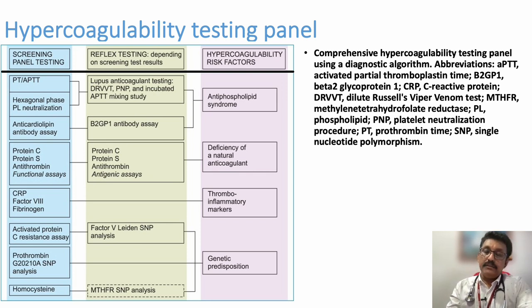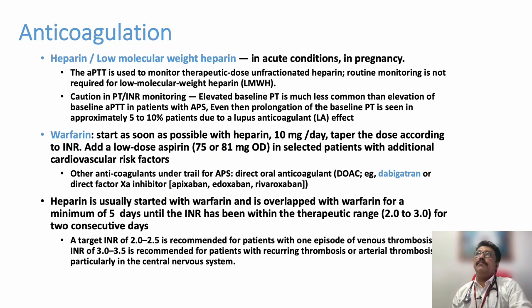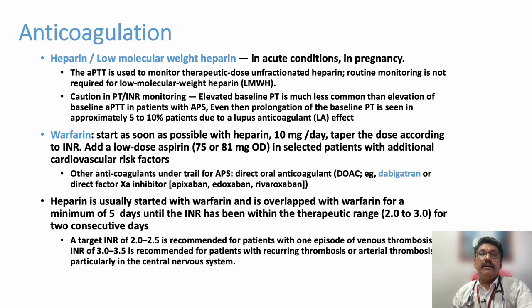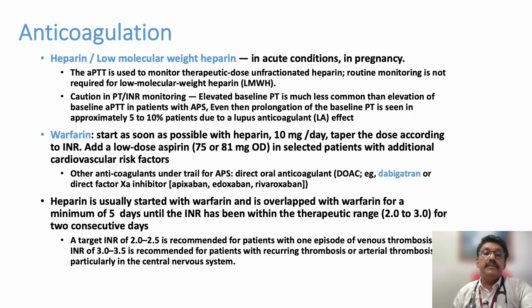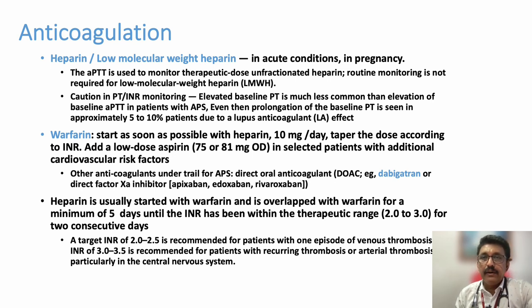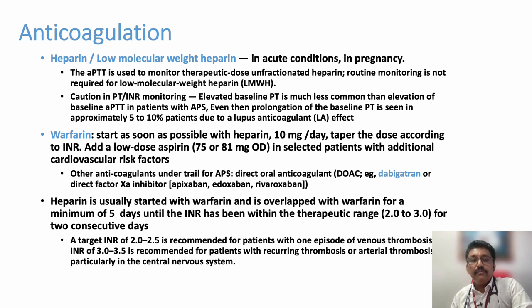Once you diagnose antiphospholipid antibody syndrome, whether the patient is pregnant or not, we have to start heparin. Heparin can be given as 80 units per kg IV bolus, then 18 units per kg per hour as an infusion, or 5000 international units TID. Low molecular weight heparin is equally beneficial and does not require APTT monitoring, whereas regular heparin does require monitoring and hospital admission. Low molecular weight heparin can be given on an outpatient basis. Cost-wise, low molecular weight heparin is more expensive than regular heparin.